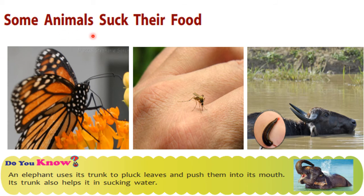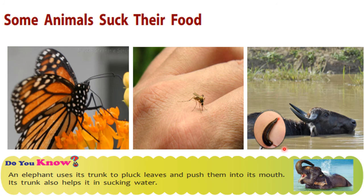Some animals suck their food. See this picture — butterfly. Butterflies suck honey from flowers. Insects like butterflies, mosquitoes, and leeches have a long hollow tube-like structure that helps them to suck their food. Mosquitoes bite and suck blood. A leech is a worm-like insect which feeds by attaching itself to other animals and sucking their blood.